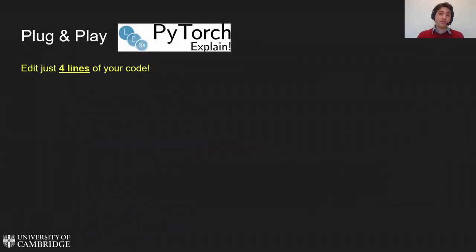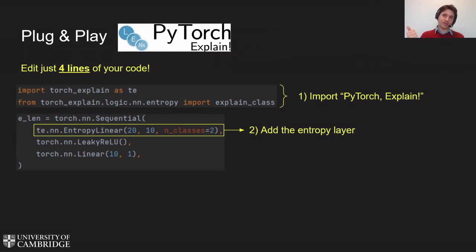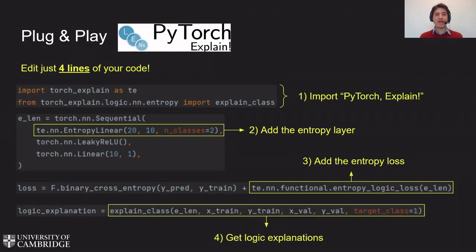In practice, implementing ELENs requires four lines of code only. Just import pytorch explain, add the entropy layer, then add the entropy loss to your loss function, and extract logic explanations. Yes, it's that easy.